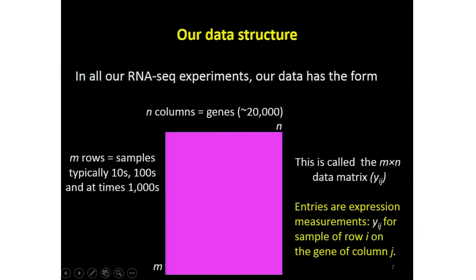Bearing in mind that this is an educational talk, I want to be very clear that we're dealing with arrays of numbers — gene expression values. In a microarray, they will typically be on a log scale. In RNA-seq, they'll typically be counts, though there may well be some logarithm taking at some point. And in my formulation, rows are samples and columns are genes. You could have columns as exons or transcripts, but I'm keeping it simple: rows are samples, columns are genes.